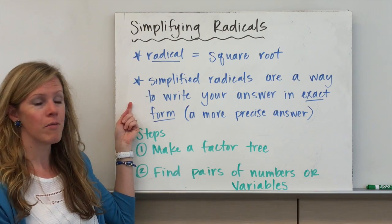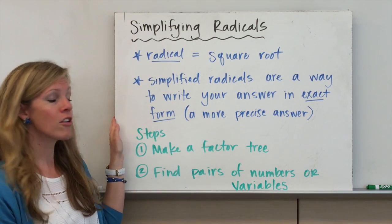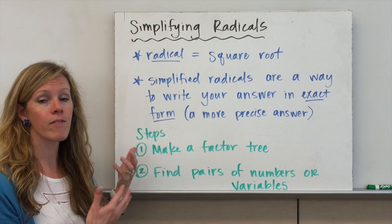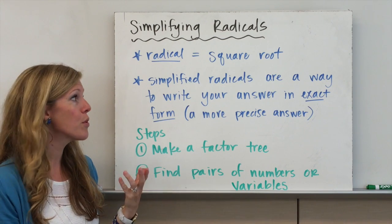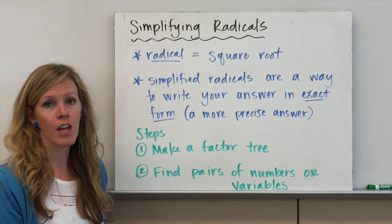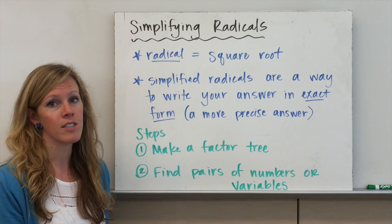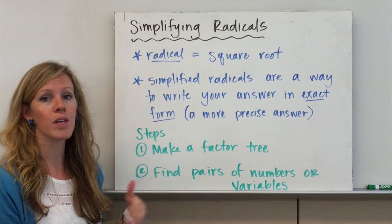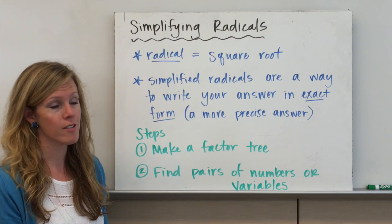The reason we simplify radicals is because it's a way to write your answer in exact form or give a more precise answer. Because if you put a radical or square root into your calculator, it's technically giving you a rounded decimal answer. So if we simplify it, we get a nice, precise mathematical answer.